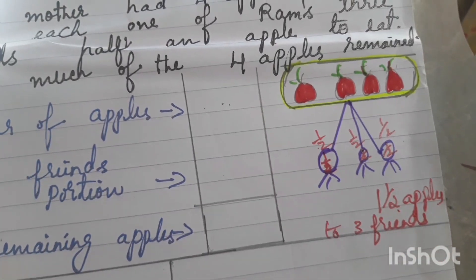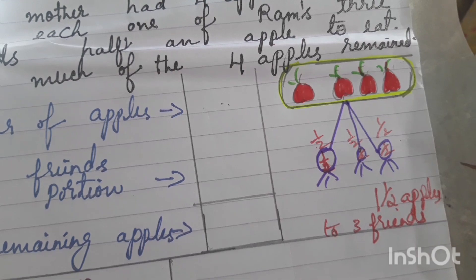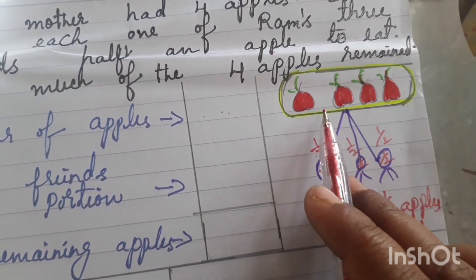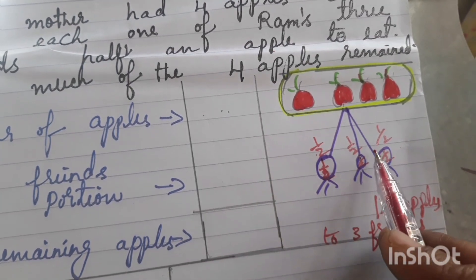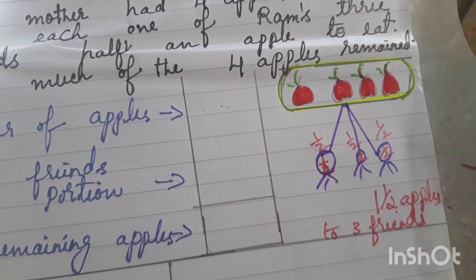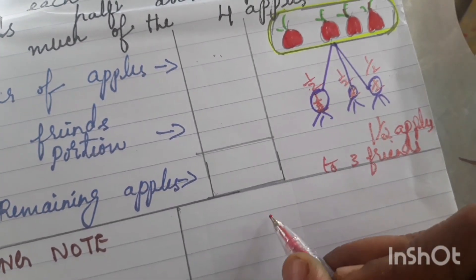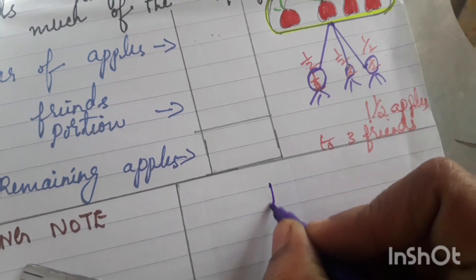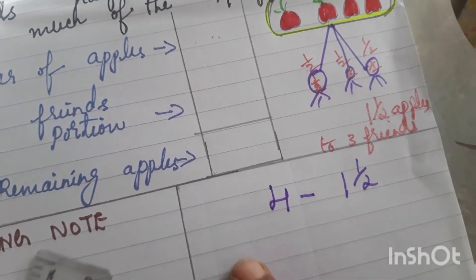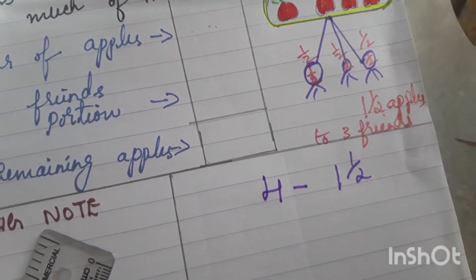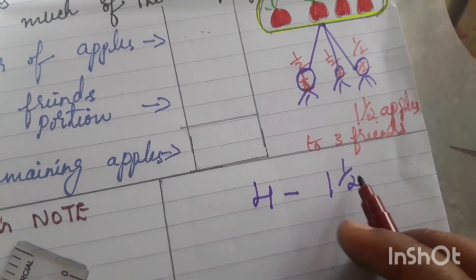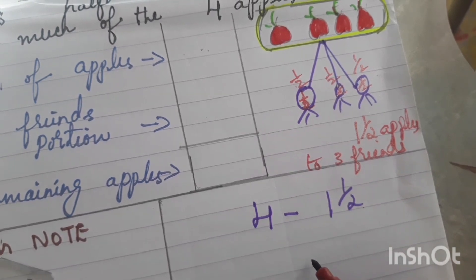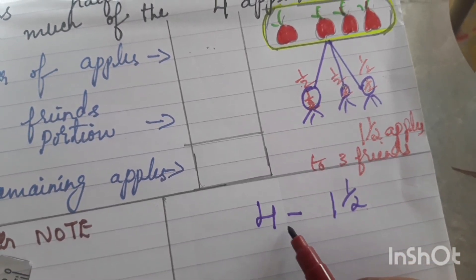Totally 1 and a half apples were distributed to 3 friends. How much of the 4 apples remain? This is a subtraction sum — we need to find how much is left.